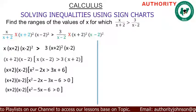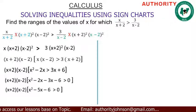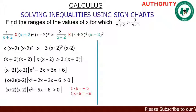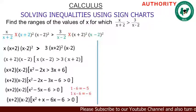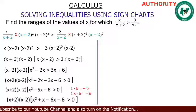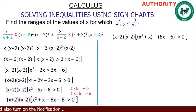Now we need to factor x²-5x-6. We look for two numbers that add to -5 and multiply to -6. Those numbers are 1 and -6: 1+(-6) = -5, and 1×(-6) = -6. So x²-5x-6 factors as (x+1)(x-6).